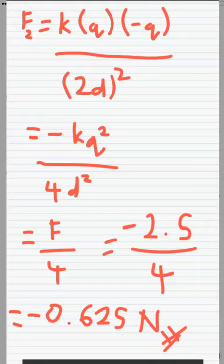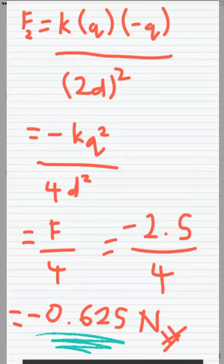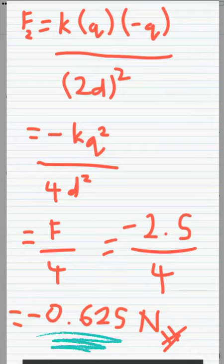For F2 we use the same formula and we get negative kq squared over 4d squared, which is same as F, so F over 4 equals negative 2.5 over 4, and we get negative 0.625 newtons.